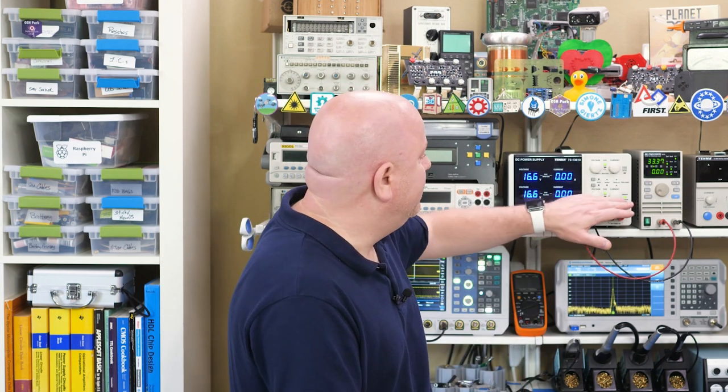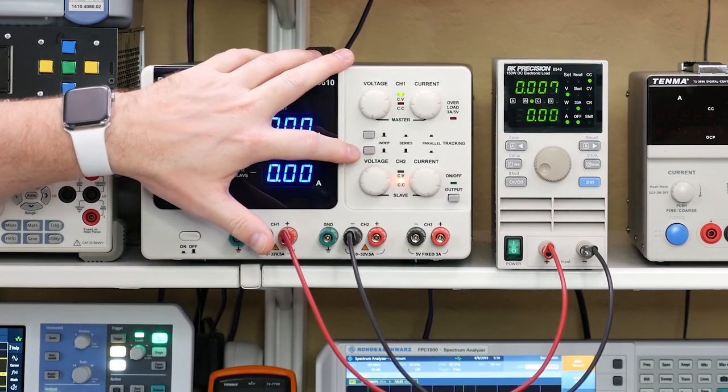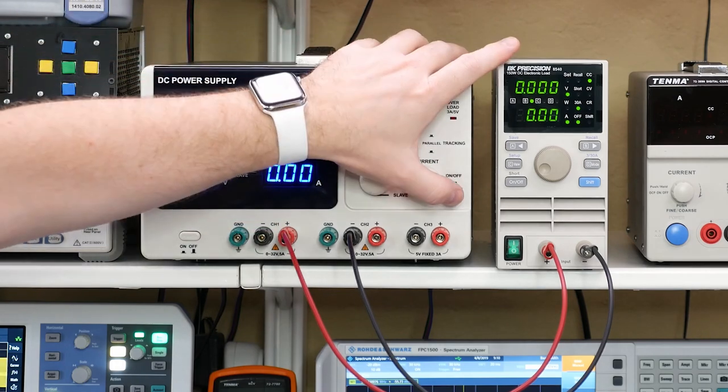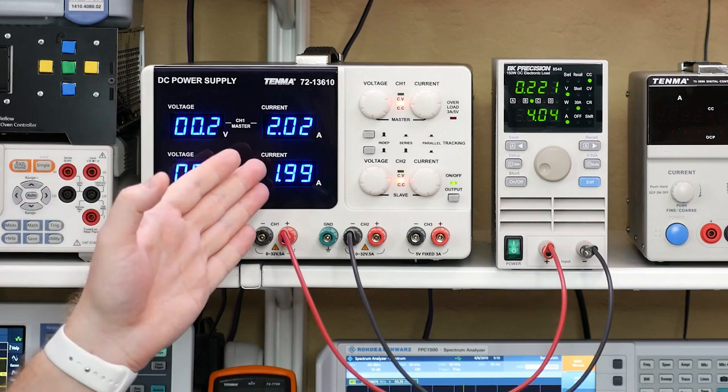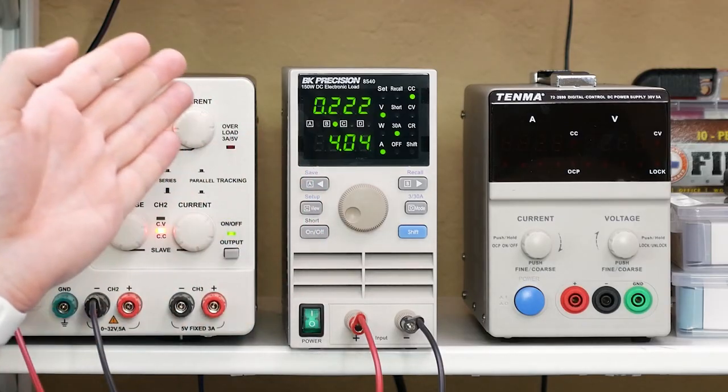Now to switch to parallel mode the first thing I'm going to do is turn off the output and then I'm going to press the switches so that we get parallel tracking which means they both need to be pushed in. Now when I turn on the output and my load I can see that I'm outputting 2 amps on each channel but the meter is syncing 4 amps.